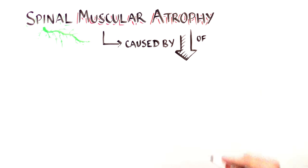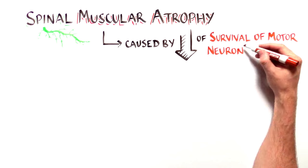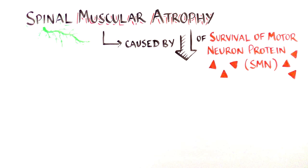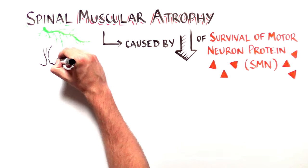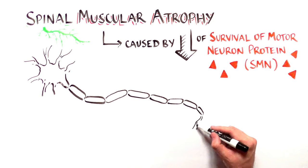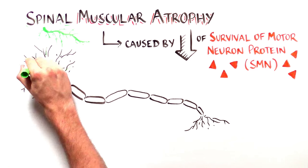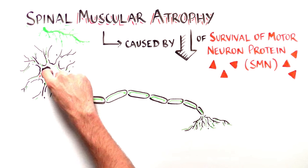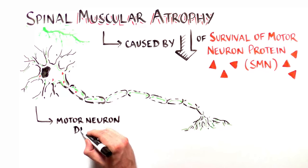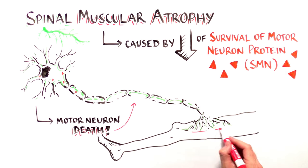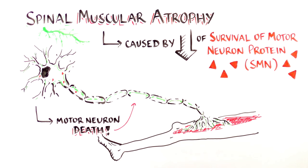SMA is caused by too little of a vital protein called survival of motor neuron, or SMN, in the spinal cord's motor neurons. Too little of this protein causes the motor neurons to die and the muscles they control to waste away.